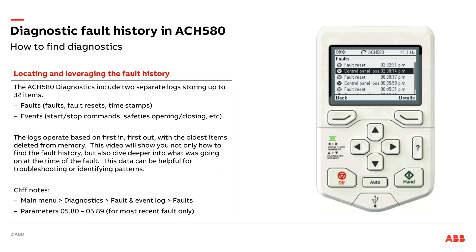If I'm not sure what a control panel loss fault is, I can go ahead and just hit the question mark and it'll tell me what this is. It can also give me some hints and tips on what might have been the problem in the first place. I purposely removed my control panel from the drive while it was running in hand mode. However, if this had intermittently happened, maybe somebody had a bad connector between the control panel and the drive. So it gives you some tips and hints there.